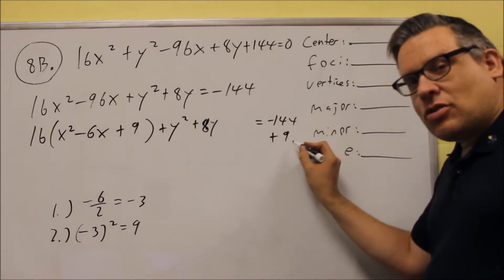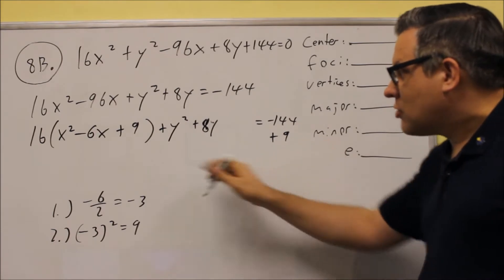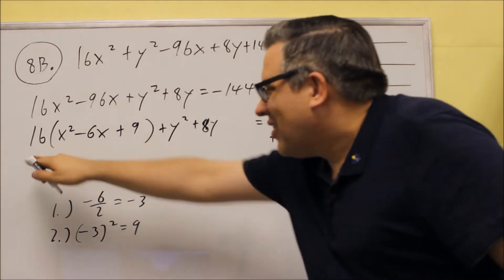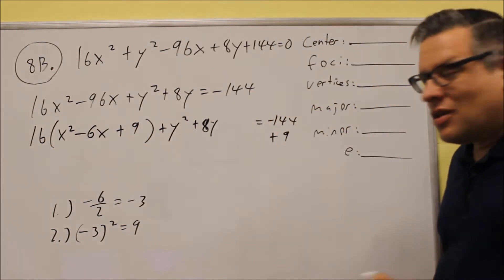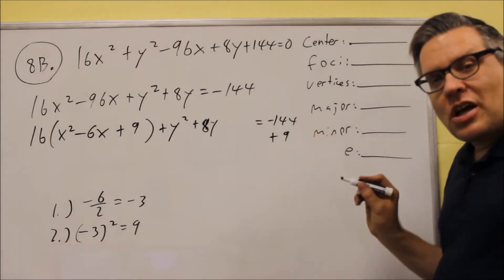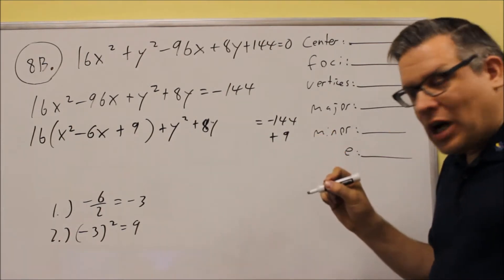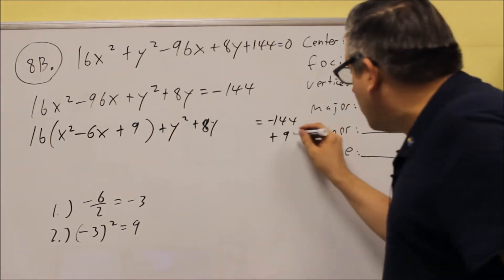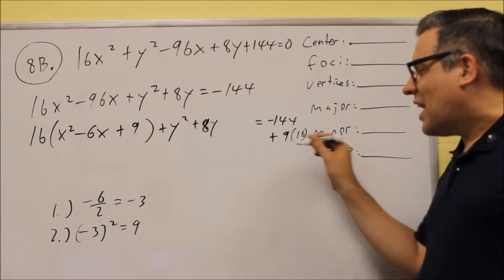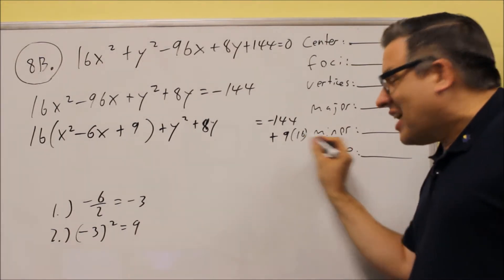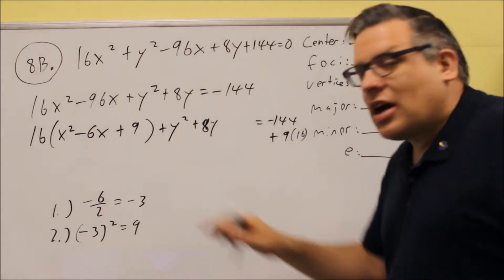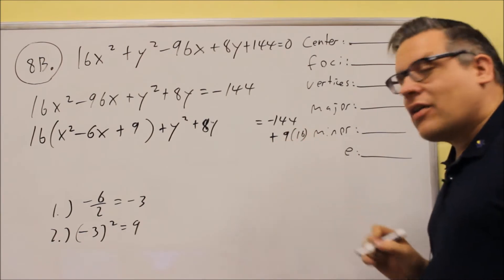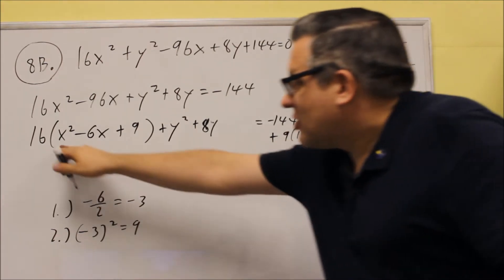But when you add it to the right-hand side, don't forget to multiply this by the number outside the parentheses. This is the most common mistake I see students making on this kind of problem, forgetting to multiply it by the number in front. It's very important that you remember to multiply that. Don't just add 9, you're adding it 9 times 16. So you add 9 inside here, but on the outside here you have to multiply it by the 16.